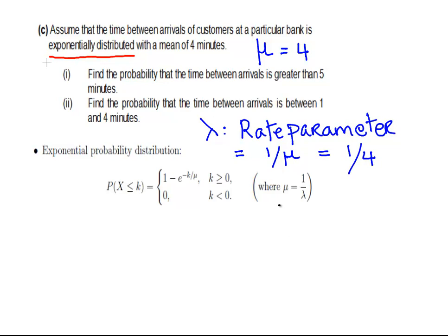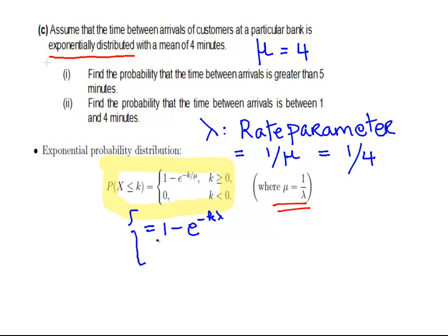It's also worth noting that mu equals 1 over lambda, so the rate parameter lambda and the mean mu are reciprocals of each other. This matters because sometimes the formula from the back of the exam paper is given in terms of mu, but in other cases it might be given in terms of lambda — for example, as minus k times lambda. The two expressions are directly equivalent to each other, just a slight change of notation.